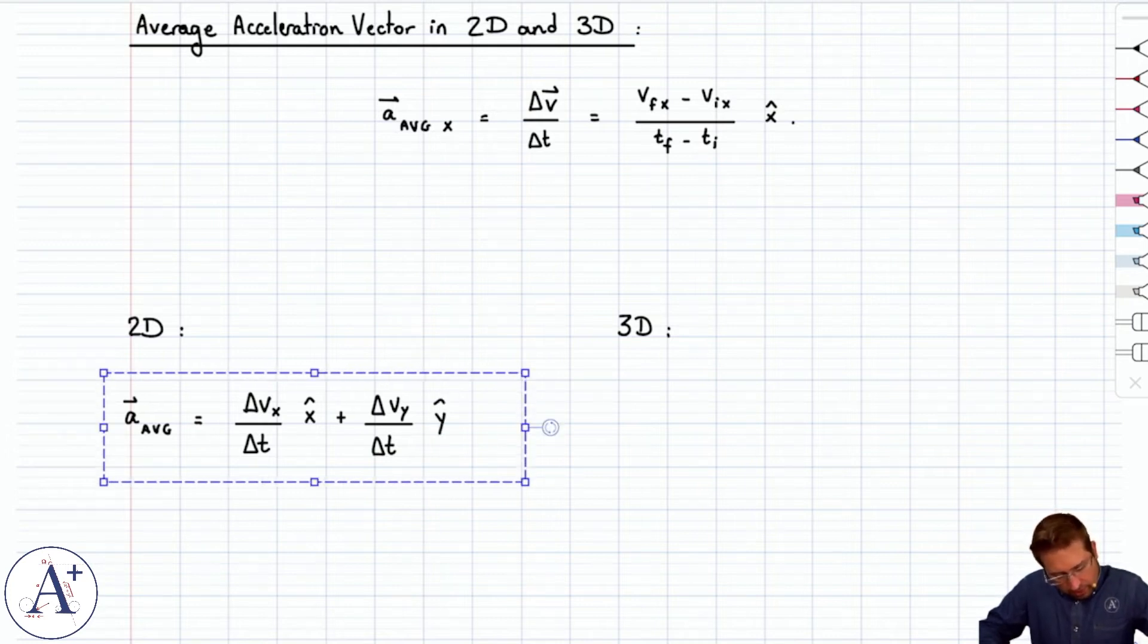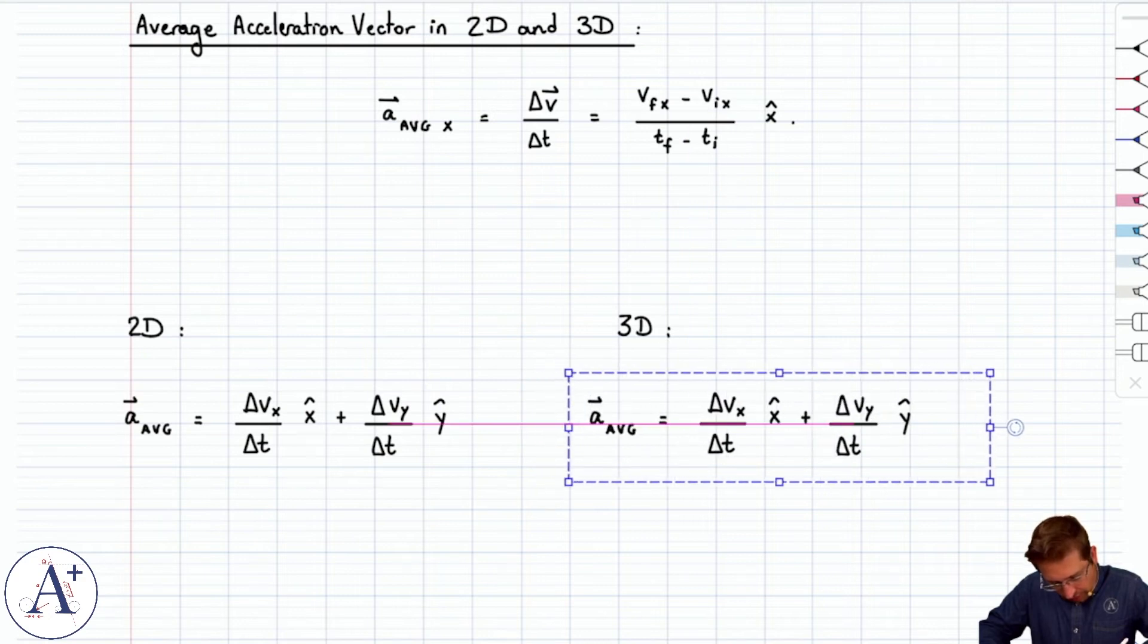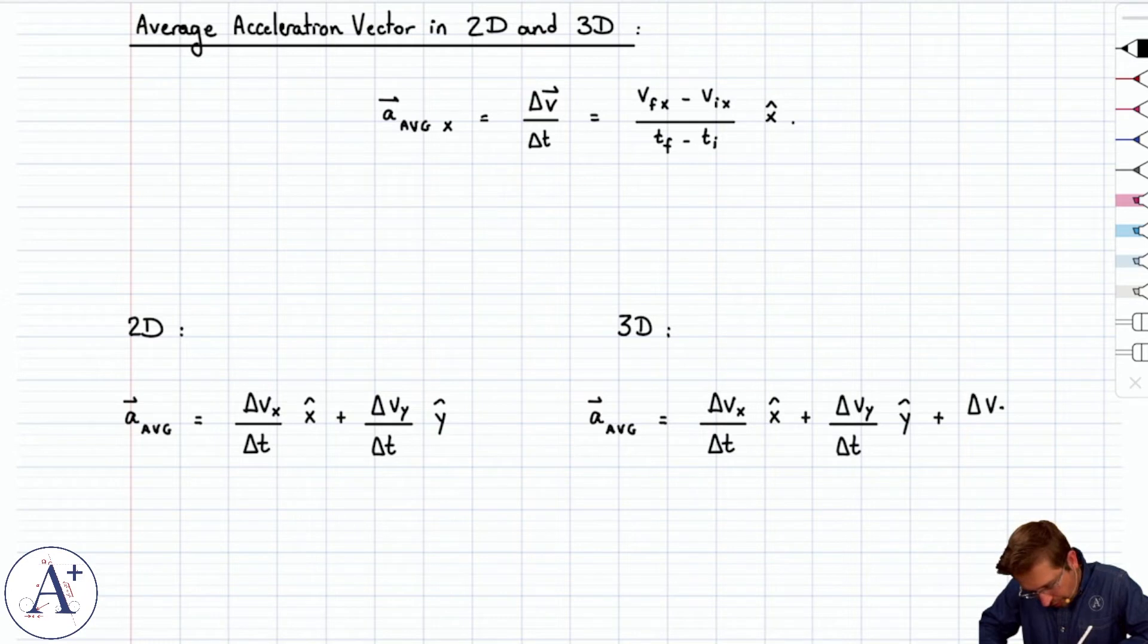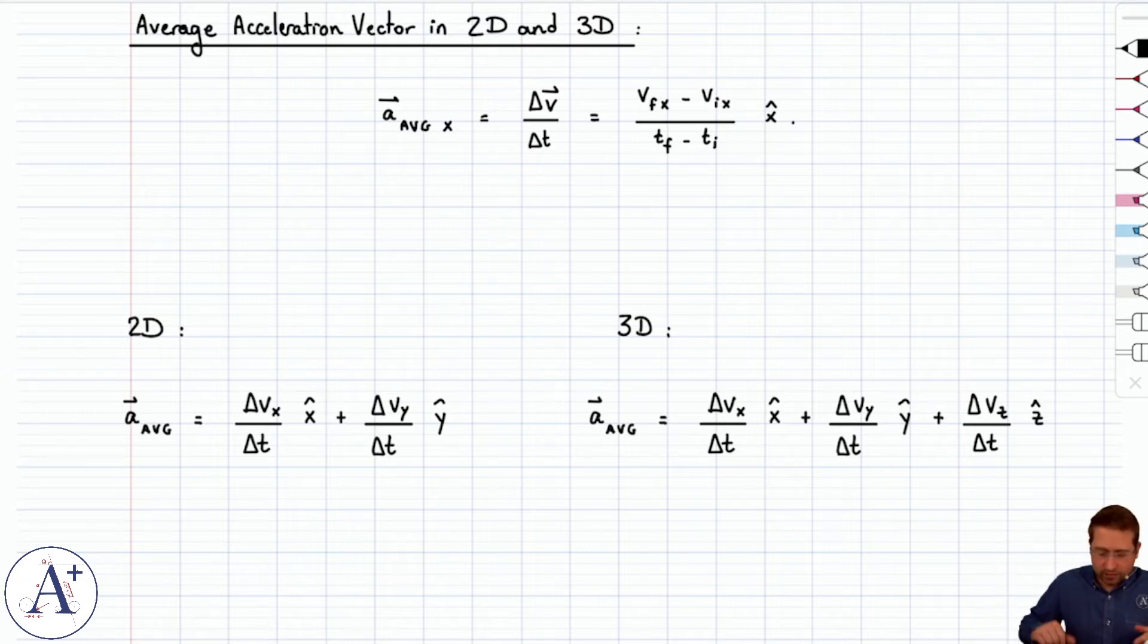And then for 3D, you take the 2D generalization, and then you extend it to a third component, that would be delta v_z, the change of velocity along the z direction, divided by delta t, carried by z hat.